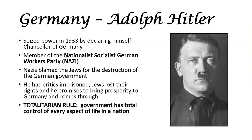Our dictators — the most prominent throughout this era is going to be Adolf Hitler, who seizes power in 1933 by declaring himself Chancellor of Germany. He is a member of the Nationalist Socialist German Workers Party, also known by their abbreviation, the Nazi Party. They blame the Jews for the destruction of the German government and all of the economic problems that result from World War I, as well as from the economic collapse worldwide. He is going to imprison all of his critics.